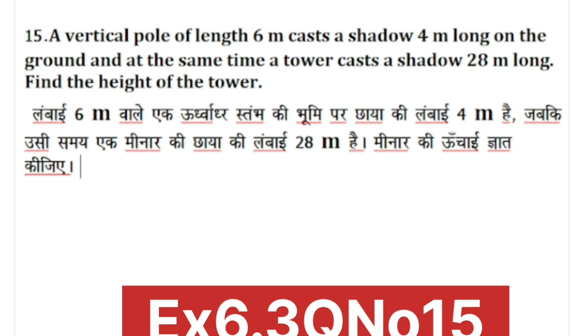Exercise 6.3, question number 15. A vertical pole of length 6 meters casts a shadow 4 meters long on the ground. At the same time, a tower casts a shadow of 28 meters long. Find the height of the tower.